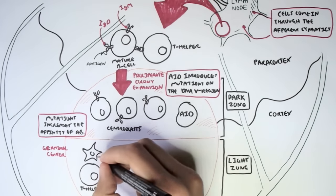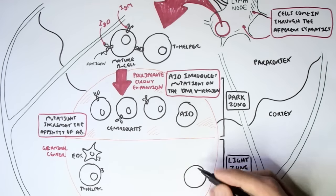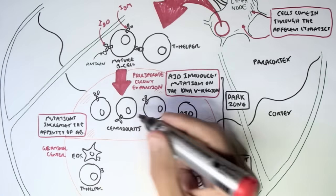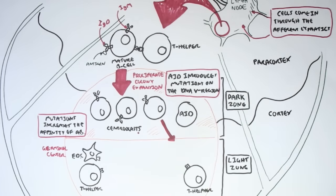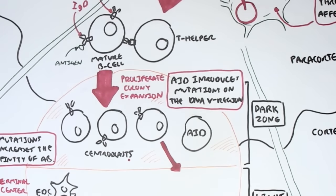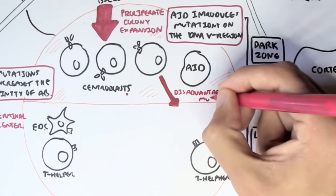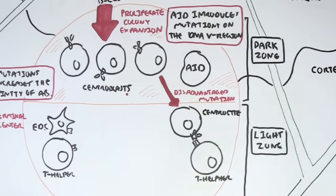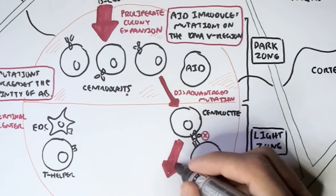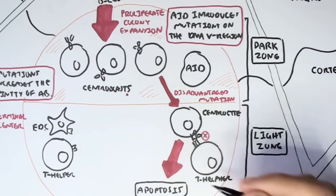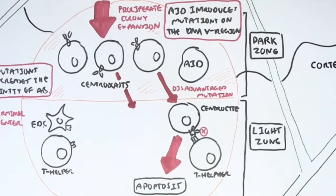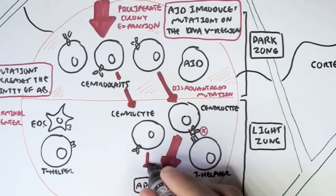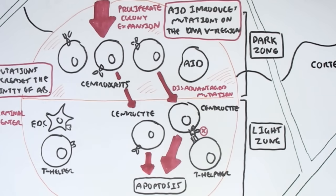In the light zone of the germinal center, we have other cell types such as follicular dendritic cells and T helper cells, with the antigen that was presented to the mature B cell in the first place. The centroblasts move from the dark zone into the light zone, where they become centrocytes. A centroblast with a disadvantaged mutation — one whose antibody does not recognize the antigen presented by the T helper cell — will be destroyed through apoptosis. Similarly, if a centroblast's affinity decreased, it goes through apoptosis because it is not needed by the body.